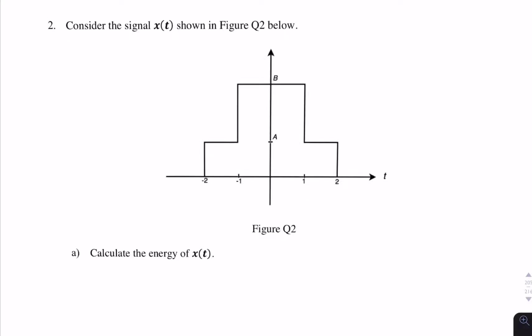This question gives us a continuous-time signal x(t), and we're asked to find the energy. To find the energy, we take the integral of x(t) squared. The energy of the signal is the integral from minus infinity to infinity of x²(t) dt.